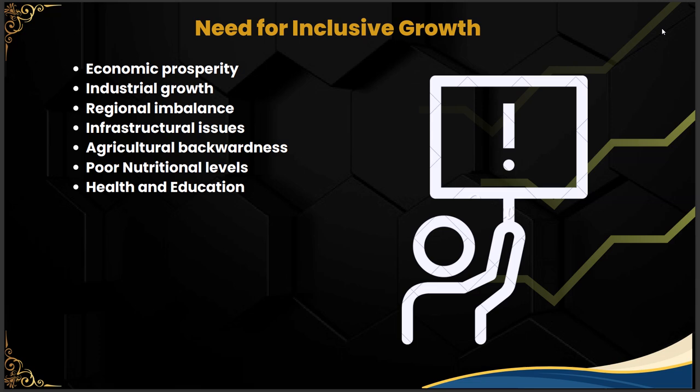Poor nutrition levels are a critical issue. Addressing chronic under-nutrition is crucial, as clearly reflected by India's low Global Hunger Index ranking — India was ranked 111 out of 125 countries in the 2023 Global Hunger Index — which shows a grim situation and the country's battle with widespread hunger among the population.